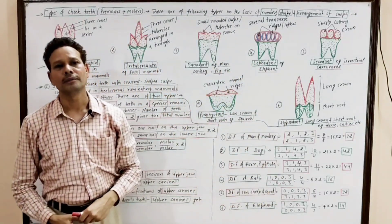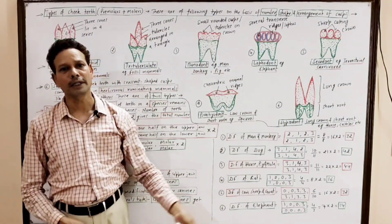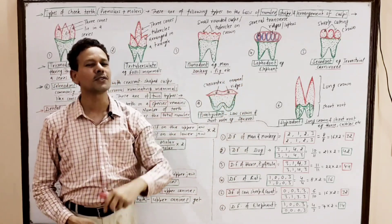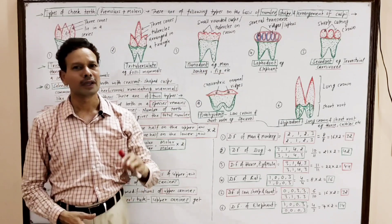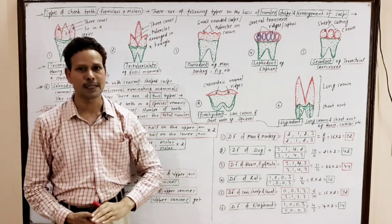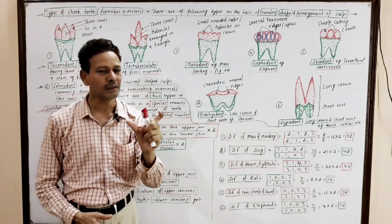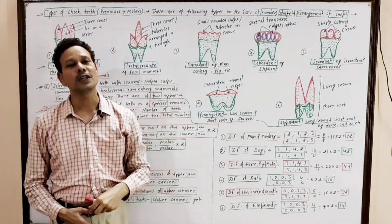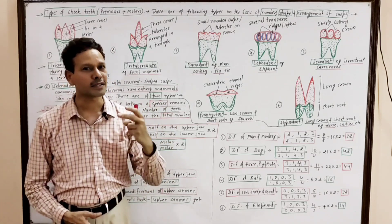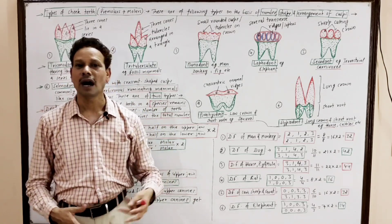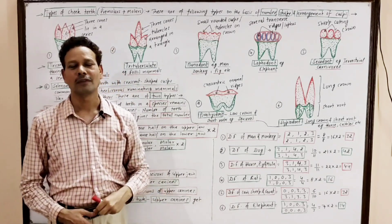Dear students, please note these notes have been uploaded in the description of the video — please download your notes. This is the second lecture of dentition in mammals. In this lecture, I will cover different types of cheek teeth, dental formula, and some modifications which are unusual teeth.